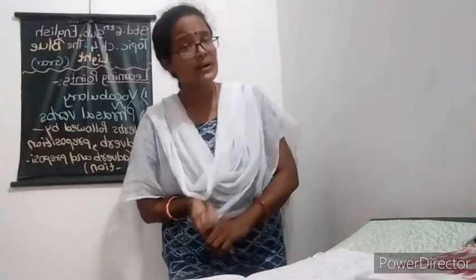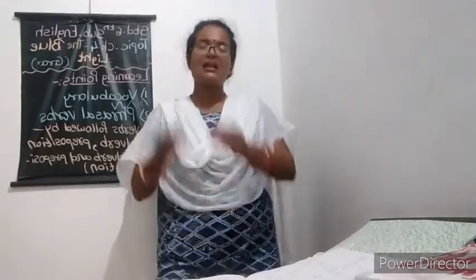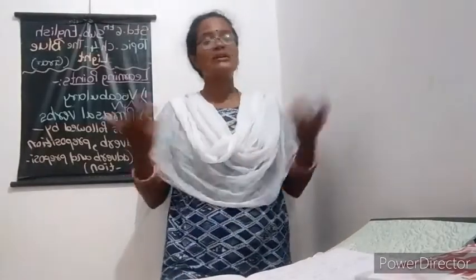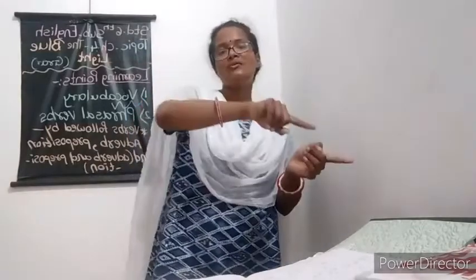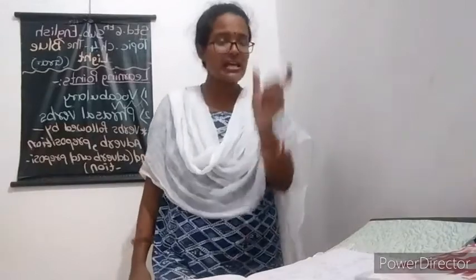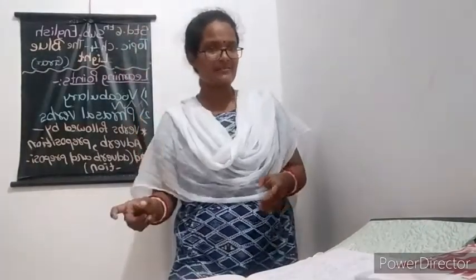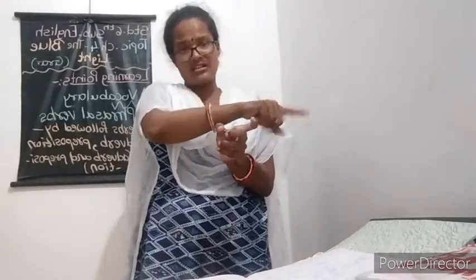Transitive verbs are the verbs that have a direct object to receive the verb's action. Example: The man loves his children. The man is the subject. What is the action of the man? Loves — so love is the verb. Who receives the action of love? His children. So his children is the direct object. The man loves his children — the man is the subject, love is the verb, and his children receive the direct action of the verb. That's why loves is the transitive verb, as it has the object his children to receive its action.